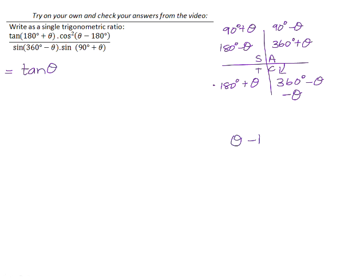If we just take a look at theta minus 180. Theta minus 180 and 180 minus theta are not the same. If I want to swap around two terms that are being subtracted, we can swap them around if we take out a negative. So that will become cos squared of negative 180 degrees minus theta.